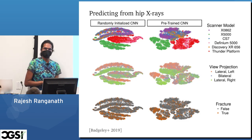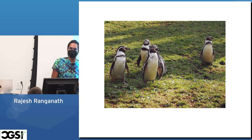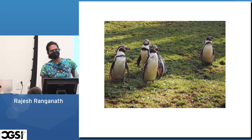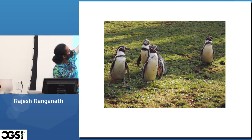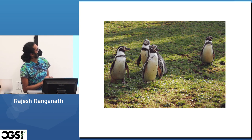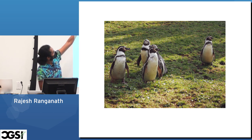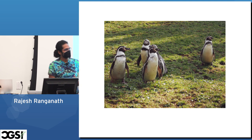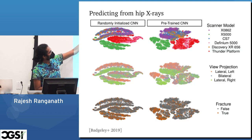In this example, we have a visualization of the representation inside a convolutional neural network. On the left is a randomly initialized one; on the right is a pre-trained one, trained for some other task. This is before we see the data, where the goal is to take hip X-rays and detect whether there's a fracture or not. If we look at a visualization of these representations projected to two dimensions, we can see they cluster, and the scanner model is pretty much determined by the cluster — this X5000 scanner is down here. The view in which the hip X-ray was taken is also clusterable.